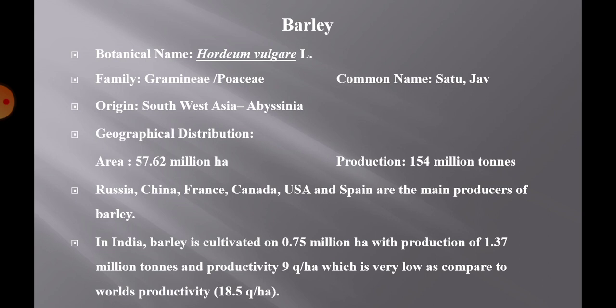Russia, China, France, Canada, USA, and Spain are the main producers of barley. In India, barley is cultivated on 0.75 million hectare area with a production of 1.37 million tons and productivity of 9 quintal per hectare, which is very low as compared to the world's productivity of 18.5 quintal per hectare. Quality of Indian barley is good as compared to other countries.